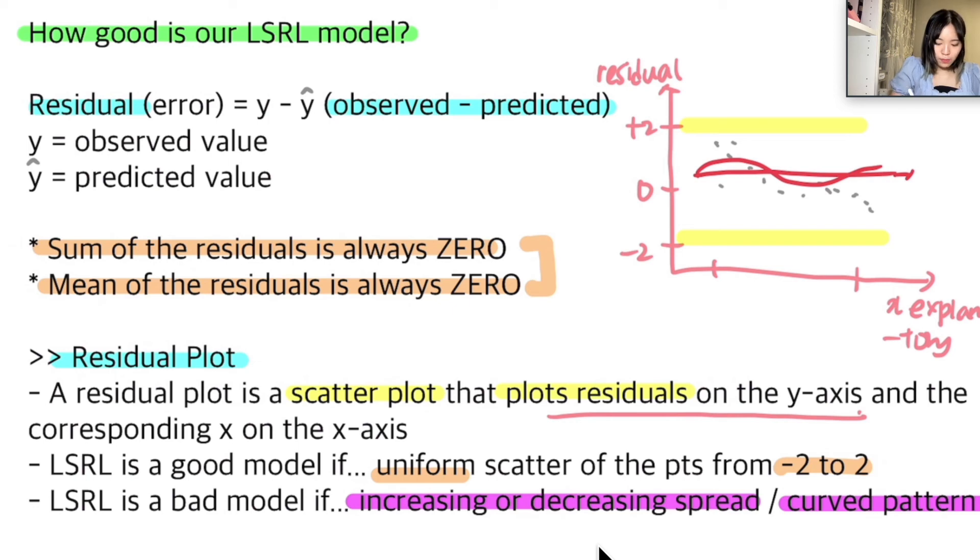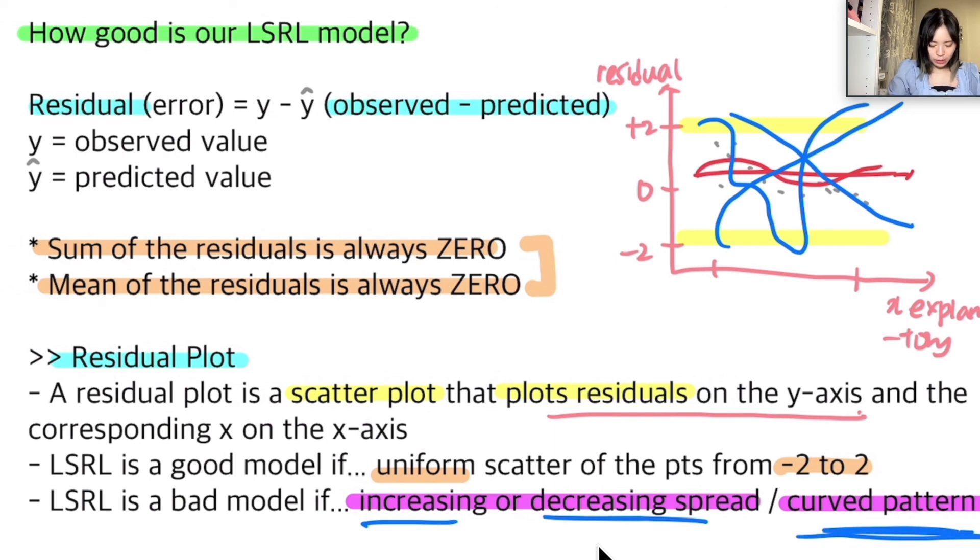But you're going to say that it is a bad LSR model if it gives you a residual plot like this, like something like this. I mean, it looks bad, sorry, like this, or like this, or like this. So it actually gives you an increasing or decreasing spread, or if it shows a curved pattern, you're going to say that this is a bad LSR model that you can interpret from drawing your residual plot.